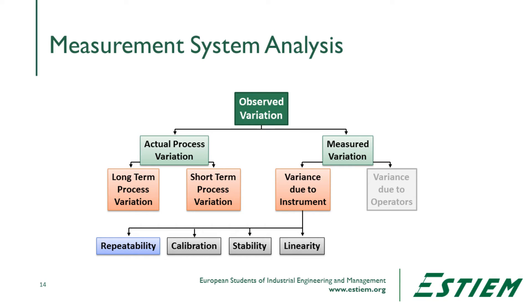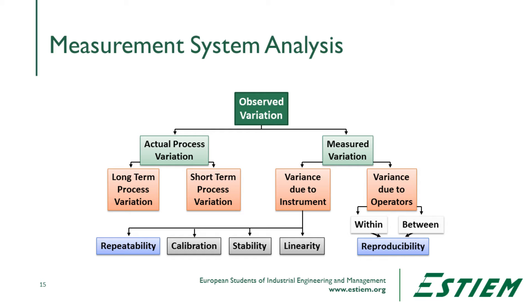If we take a look at measured variation, variance can come from the instrument itself — is it stable, is it linear, can it repeat the measurement, has it been calibrated so we can trust the reference? Variation may also be due to operators. Variation within an operator means one person doesn't measure the same part the same way twice. Variation between operators means different people measure it differently. The combination of these is what we mean by reproducibility — the ability to reproduce results someone else has gotten. Repeatability refers to the measurement system and its physical components.